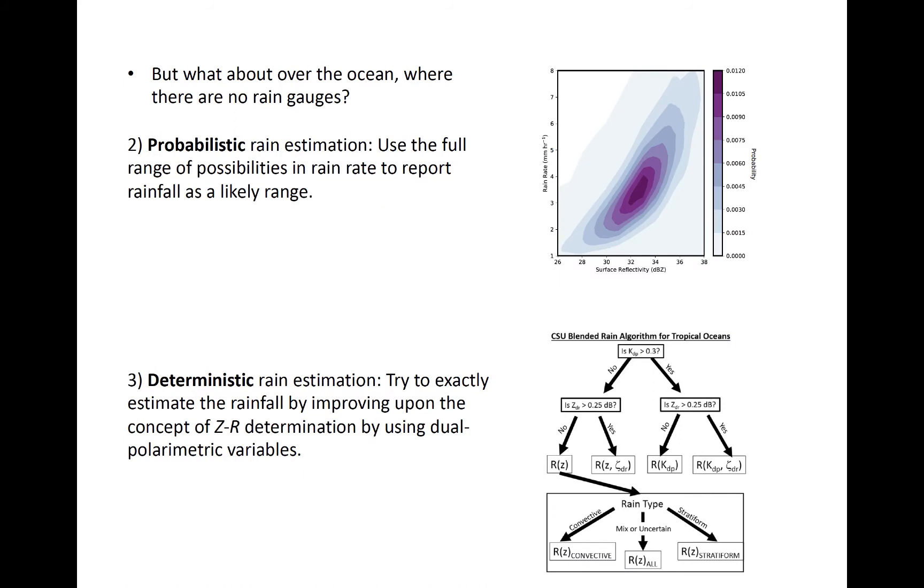However, over the ocean, we don't have rain gauge or distrometer data outside of the occasional data point on an island. In these cases, we are far less able to constrain rainfall rates satisfactorily. This is where a probabilistic estimate of rainfall can become particularly useful.